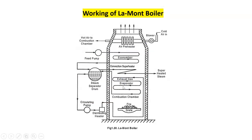We try to understand the difference between the two types of learning with the help of this example — the working of a Lamont boiler. It is a high-pressure boiler. In earlier classes, we discussed boilers — low-pressure boilers and their working. This is another type of boiler, a high-pressure boiler, where you find some additional features compared with the low-pressure boiler.